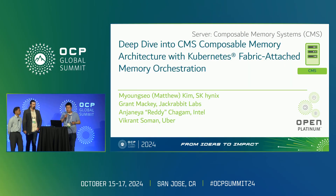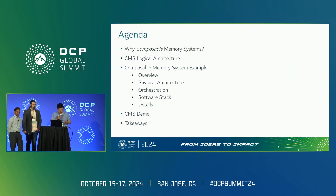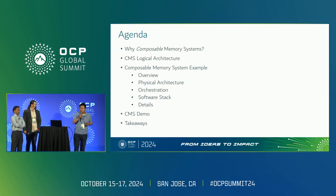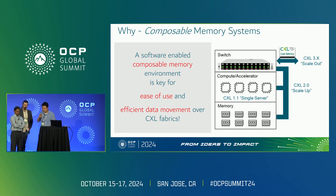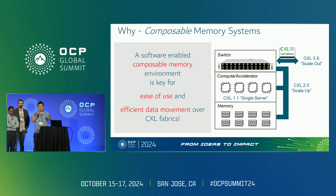Today we are introducing composable memory architecture with Kubernetes fabric-attached memory orchestration. The promise is an exciting blend of groundbreaking solutions and insightful messages regarding composable memory systems, especially focusing on multi-host based CXL memory solutions based on the OCP CMS logical and physical architecture. Open-source software based composable memory systems definitely pave the way for straightforward, simple to use, and efficient data movement over CXL fabrics.